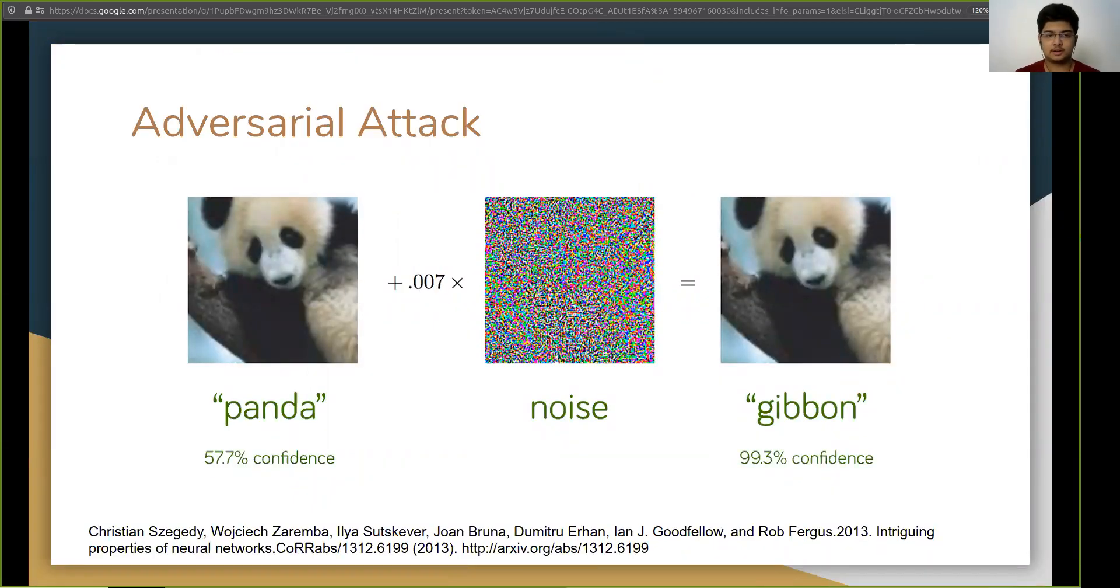The image on the left shows a panda and we all will agree that it is a panda and the model also says that it's a panda with a high amount of confidence. But when we introduce certain noise to this, we get the image on the right and if I again ask you what it is, we will still say that it's a panda. But the same model now says that it's a gibbon with a very high confidence. This work was done by Zacchetti et al and after his paper in 2013, there was a lot of research in Adversarial Attack as well as Adversarial Defense.